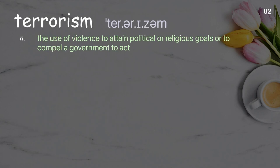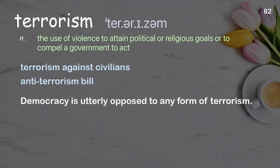Terrorism: the use of violence to attain political or religious goals, or to compel a government to act. Examples: terrorism against civilians, anti-terrorism bill. Democracy is utterly opposed to any form of terrorism.